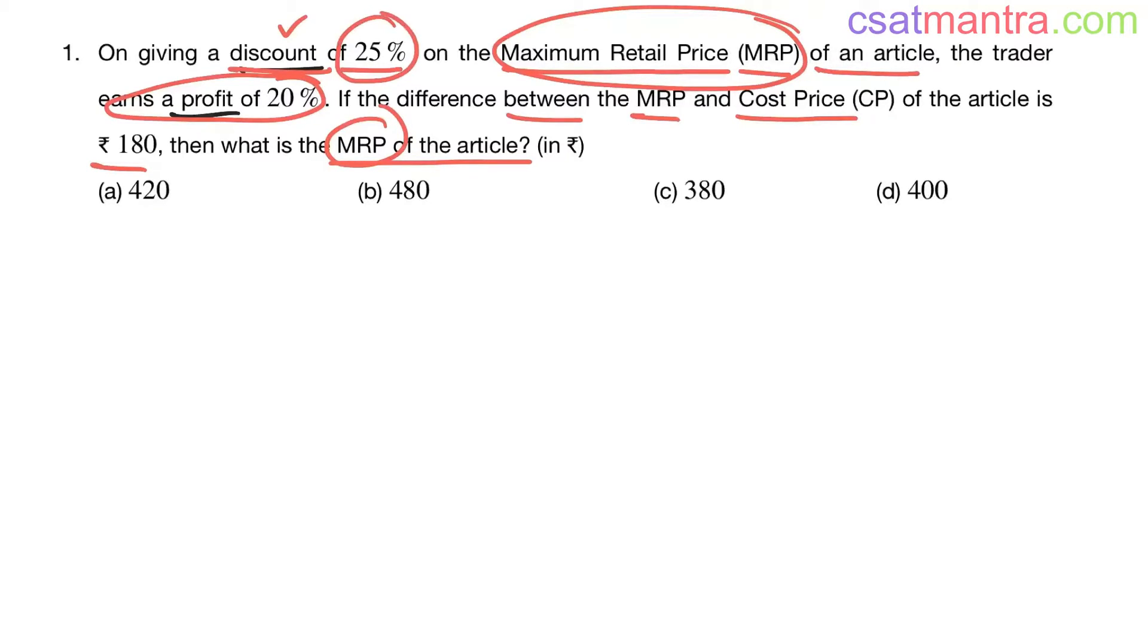On giving a discount of 25% on the maximum retail price, we don't know that, so I am assuming MRP as m. Now we are giving a 25% discount on the MRP. 25% discount is given, 25% gone, what is remaining? 75% of MRP m.